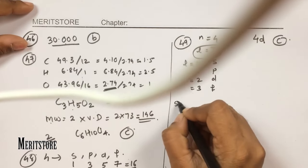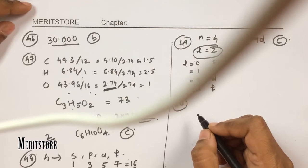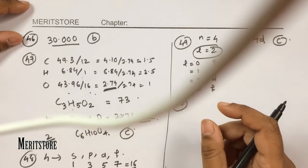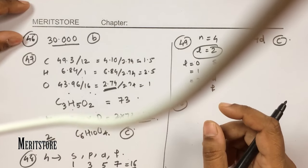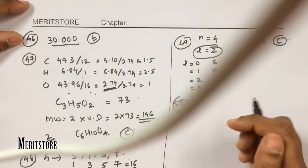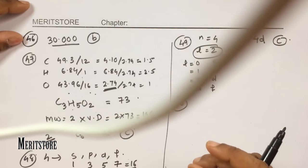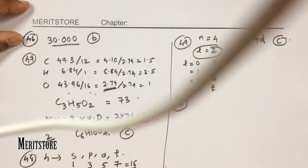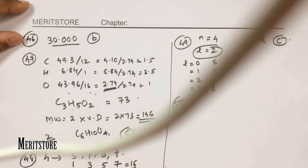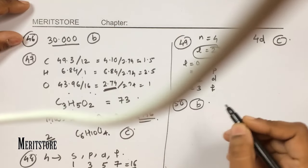Question number 50: fluorine has a lower electron affinity than chlorine. This is because the size of fluorine is very small, and in that smaller radius the electron density is very high. Because of this high electron density, the electron affinity of fluorine is lower compared to that of chlorine. Hence option B.